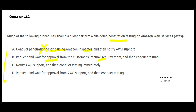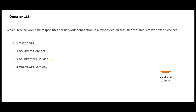Option B says request and wait for approval from the customer's internal security team. But it's not a customer data center — it's an AWS data center — so AWS support would need to approve, not the customer. Option C says notify AWS support and then conduct testing immediately. That's not correct either — you must request and wait for approval from AWS support before conducting the test. You cannot just inform them; they have to approve it because it is their environment. So the correct answer is to request and receive approval from AWS support.